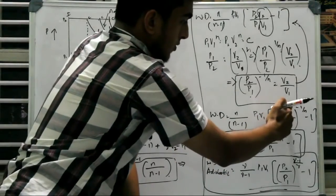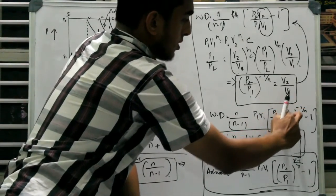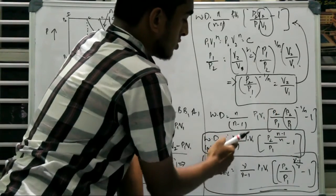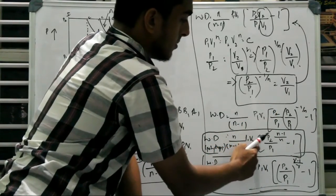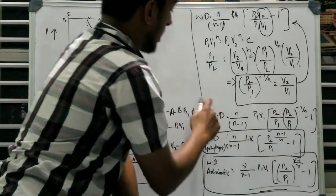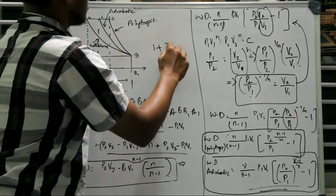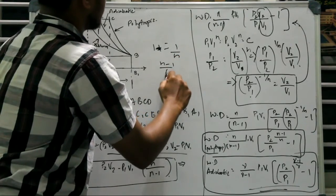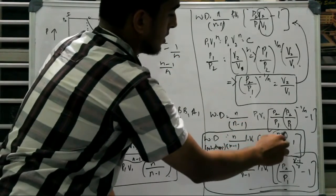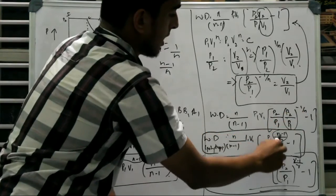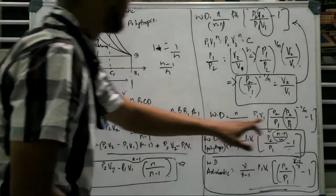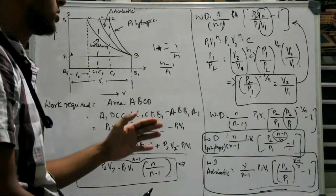So when we add the powers here, because the expressions are the same, so the powers add. So N by N minus 1 into P1 V1 will remain the same. Here P2 by P1 will become 1 plus 1 minus 1 by N, that is equal to N minus 1 by N. So that is the expression here, you get P2 by P1 to the power N minus 1 by N minus 1. So this is the final expression for the work done under the polytrophic process.